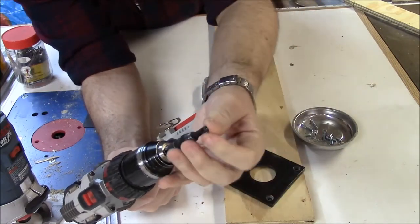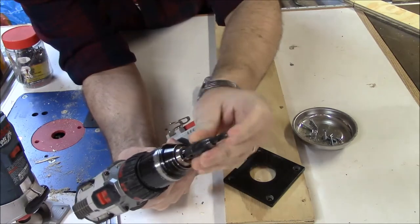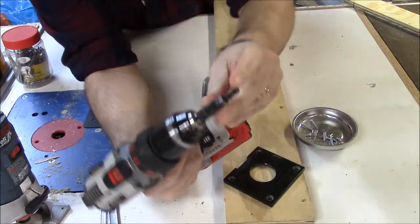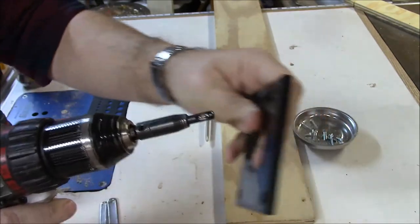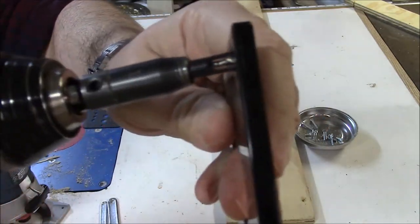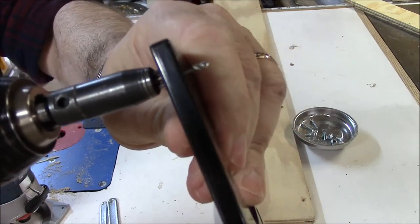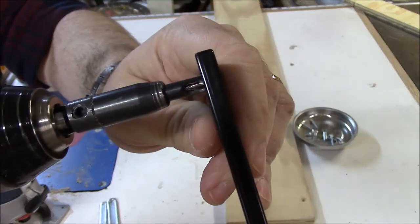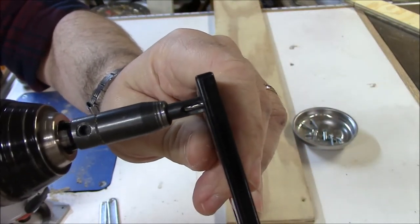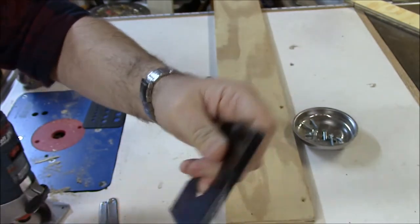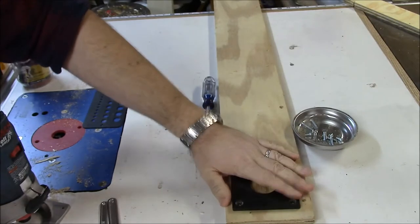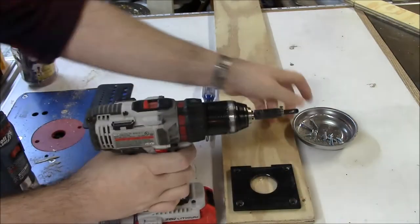This part right here is spring-loaded here. There we go. So as you push it in, you can see it just centers it right in there. It gets a nice positive registration, and you can just drill the hole straight through. It gives you right centered in that hole. So we'll use that to mark the screws there.